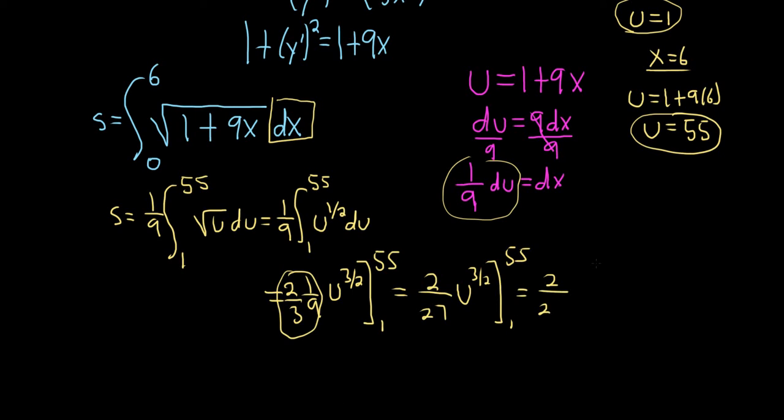So 2 over 27. So we plug in the 55 first, so 55 to the 3 halves minus 1 to the 3 halves.